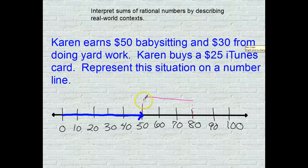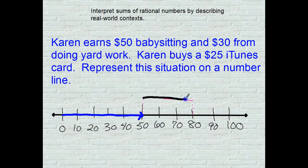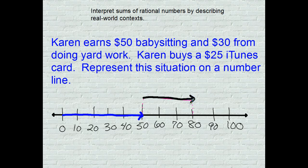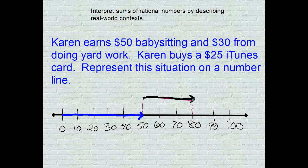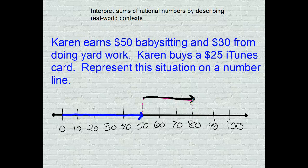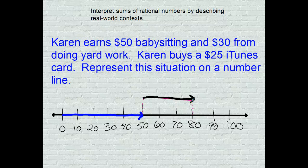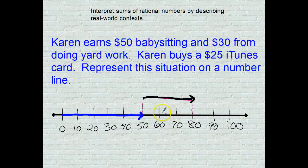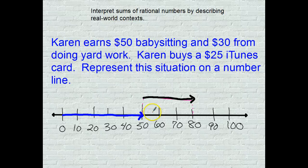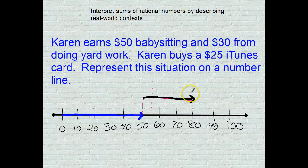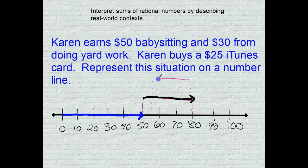Let's go with a black pen this time. We're at $80. Then from there she decided to take some of that money and buy a $25 iTunes card. That means we're going to be subtracting 25 from here, so let's go back 25: 10, 20, and 25.